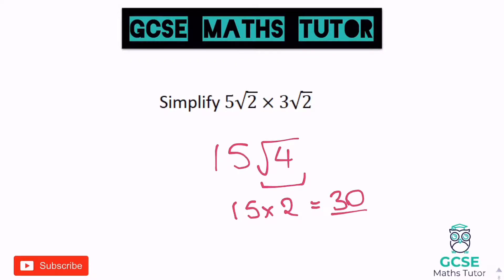As you can see, on a lot of these, sometimes we get whole numbers, sometimes we get surds in our answer, sometimes we get answers that look completely different to what we've seen before. Just stick with the process and you should be absolutely fine. That is multiplying surds. Part 3 is going to be on expanding double brackets. If you like this video and find it helpful, please like, comment, subscribe, and I'll see you on the next one.